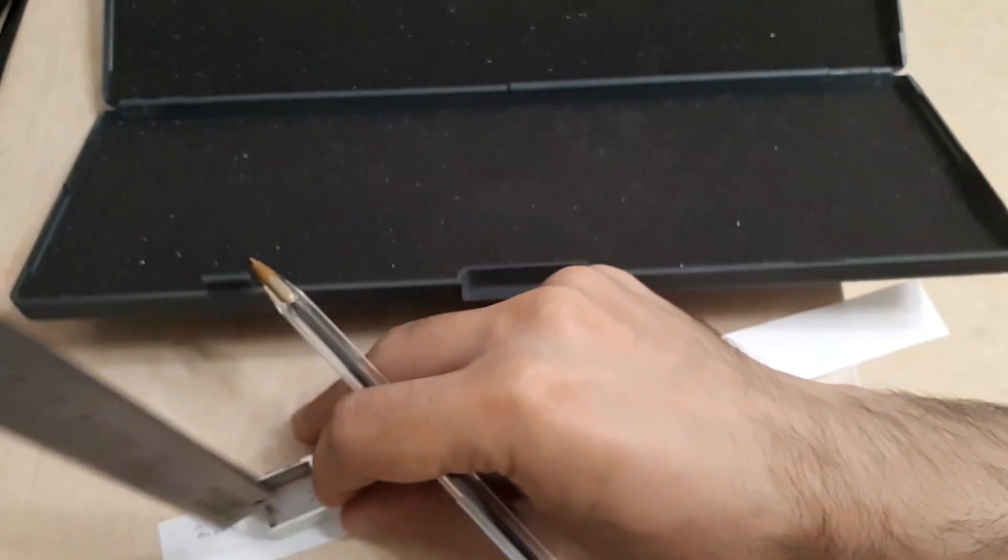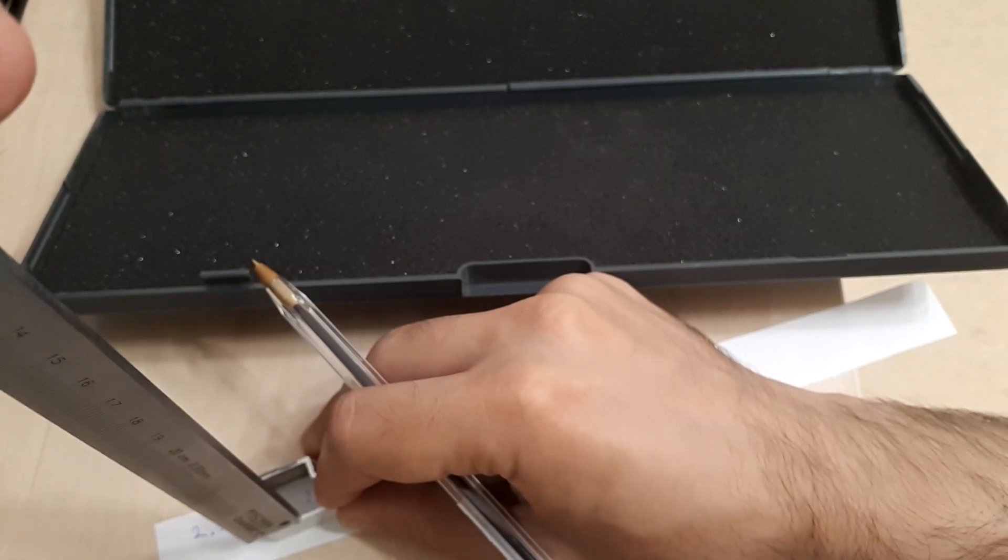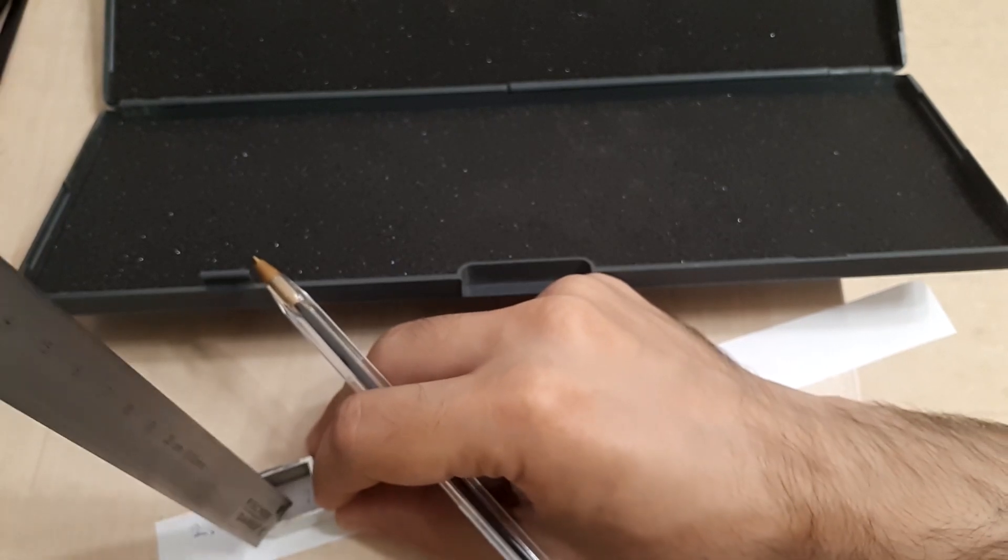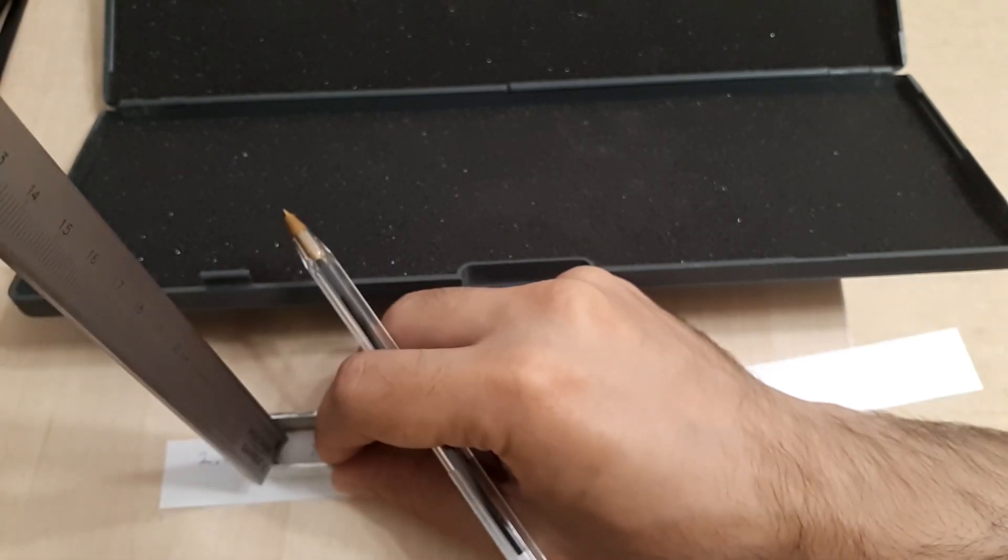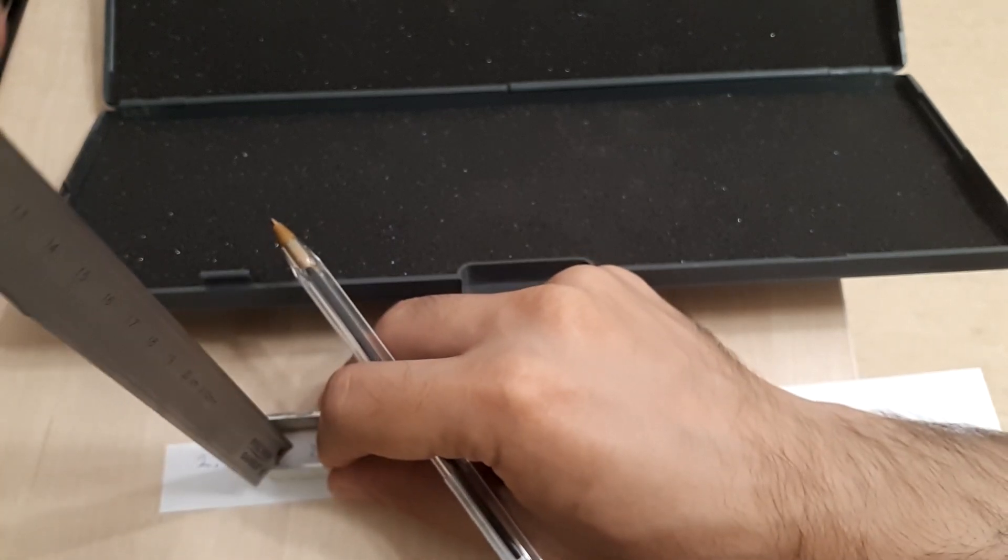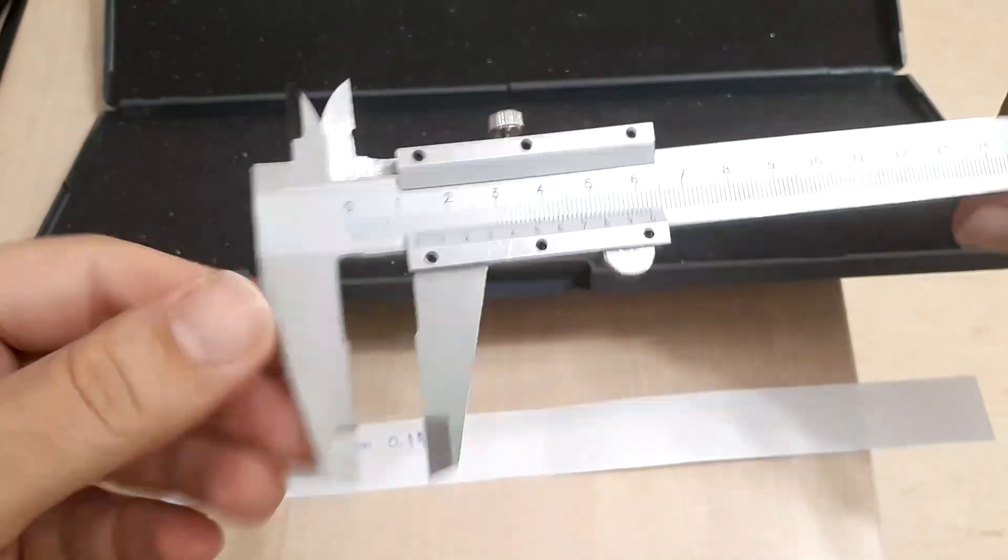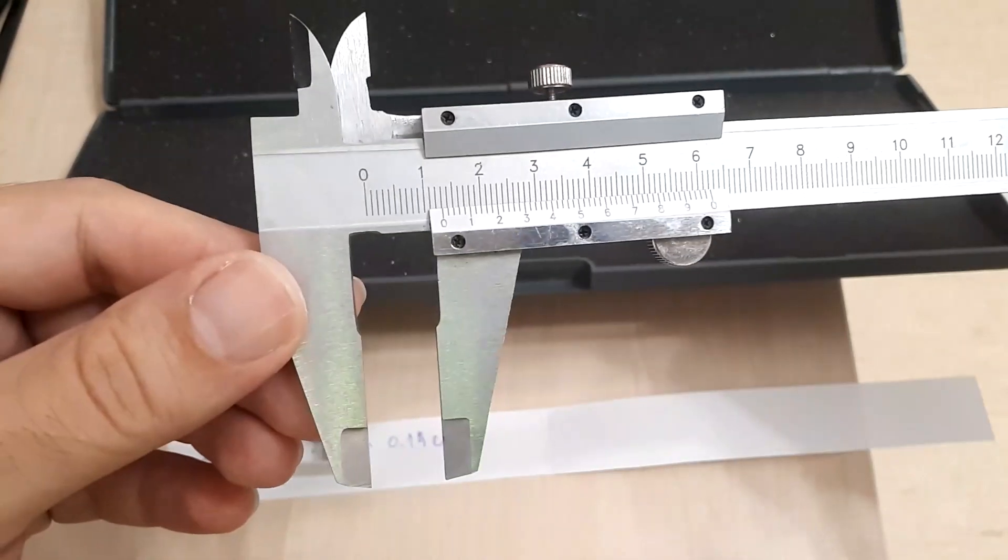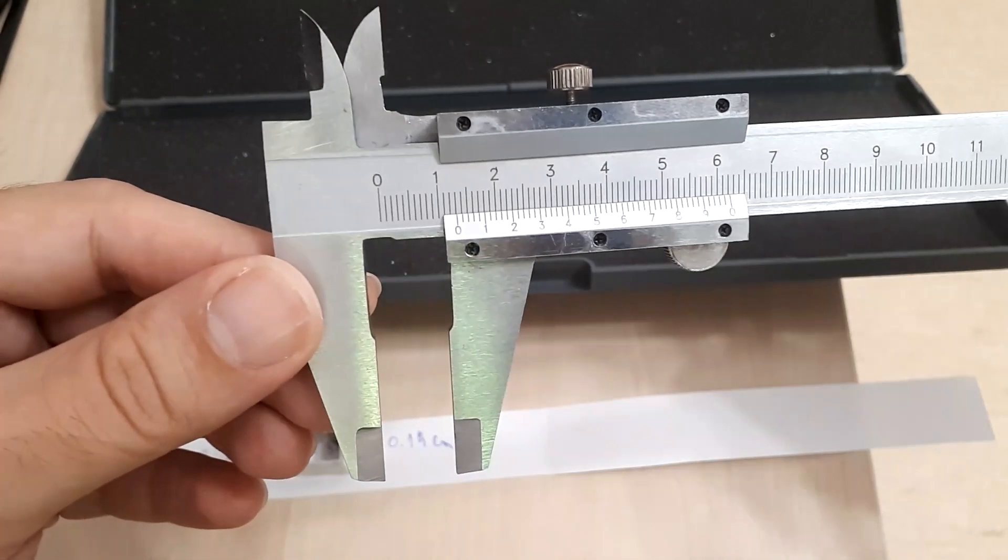And let's see what kind of measurement we are going to read. So it's one centimeter three millimeters.